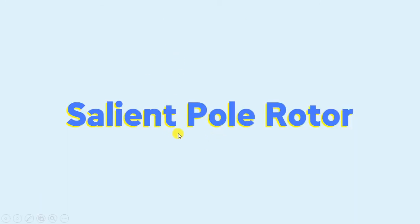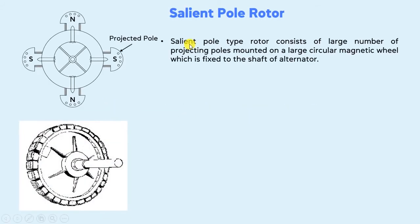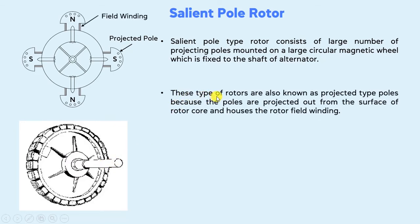First of all, we will discuss the salient pole rotor. Salient pole type rotor consists of a large number of projecting poles mounted on a circular magnetic yoke which is fixed to the shaft of the alternator. Here you can see these are the projected poles, this is the circular magnetic yoke, and this is the cross-sectional view of the salient pole rotor. These types of rotors are also known as projected type rotors, because the poles are projected out from the surface of the rotor core and house the rotor field winding.